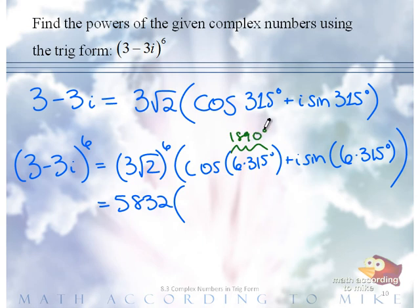1890 is coterminal to what? Between 0 and 360. 1890, please confirm, but I'm pretty sure it is 90 degrees. So, 1890 degrees is coterminal to 90 degrees.